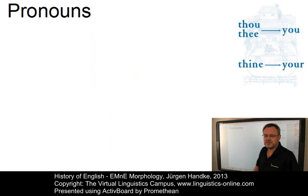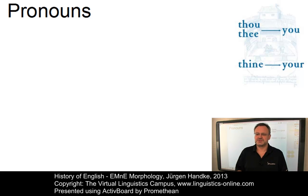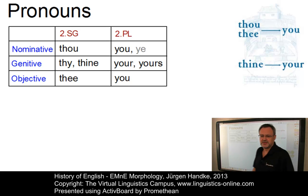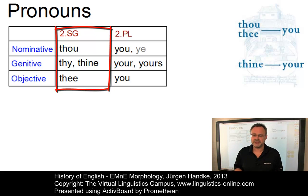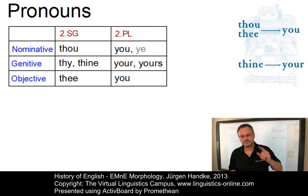The system of pronouns underwent a number of changes during the early modern English period, both in the system of personal pronouns and in other types of pronouns. The most obvious change was the loss of the second person singular. From Middle English, early modern English had preserved the pronominal distinction between the second person singular thou, expressing intimacy and affection, used among others to address children and animals, and the second person plural you, used to address people of higher rank. In early modern English, this distinction gradually disappeared.